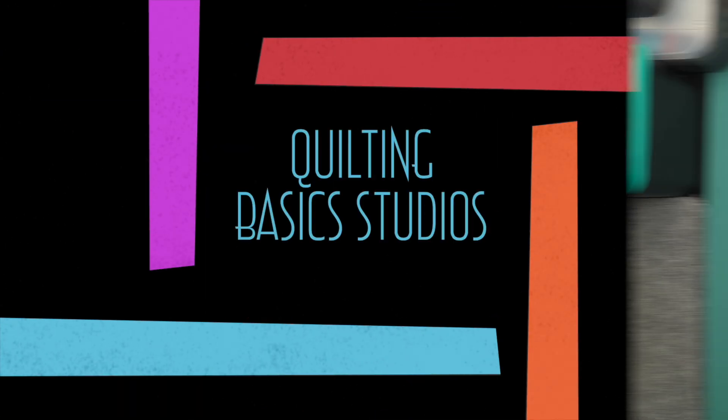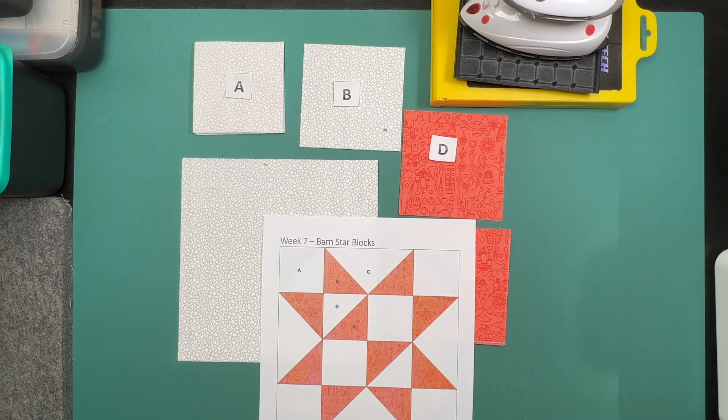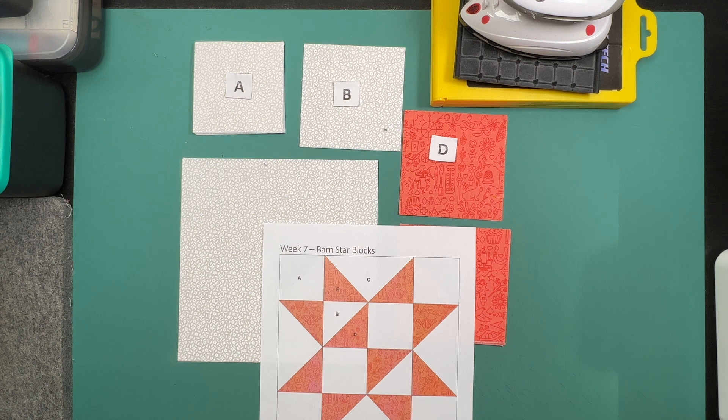This week we only have one alternate method of making this block, and that is simply to replace the half square triangles for the outer parts with our flying geese.